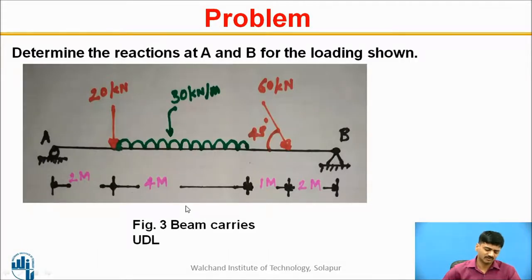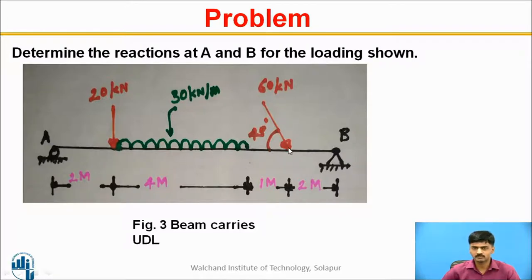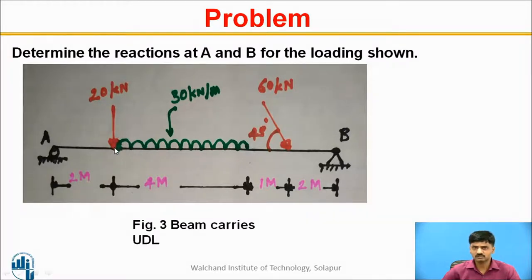Let us discuss one problem. Determine the reactions at support A and support B for the loading shown. Support A indicates a roller support; support B indicates a hinge support. Different loading patterns are present: a point load of 20 kilonewtons at 2 meters from support A, a UDL of 30 kilonewtons per meter acting over 4 meters starting at 2 meters from A, and an inclined point load of 60 kilonewtons at 45 degrees with respect to horizontal, acting at 7 meters from support A.